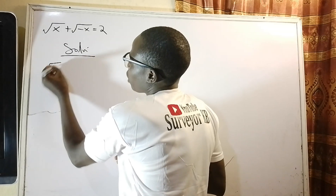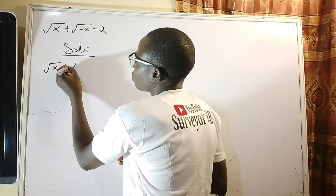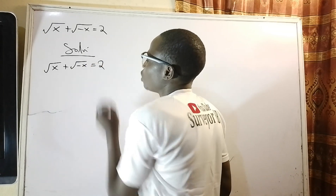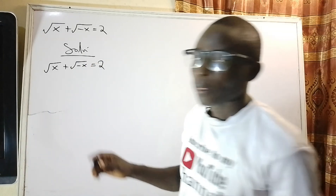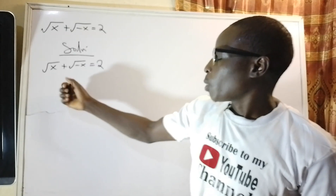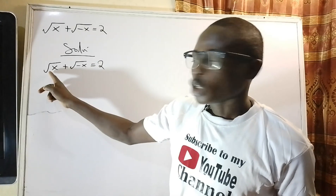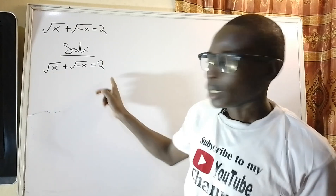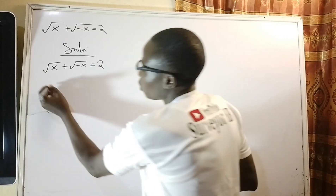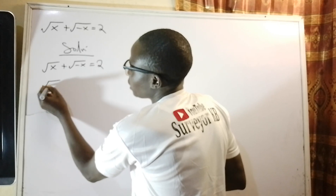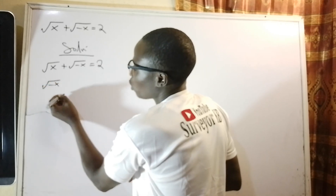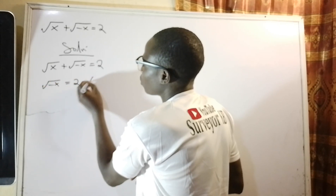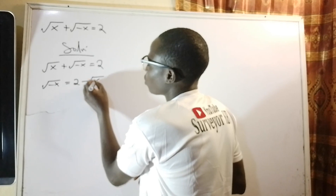Solution: square root of x plus square root of negative x equals 2. I want to transpose the square root of x to the right hand side, so on the left hand side I will have square root of negative x equals 2 minus square root of x.